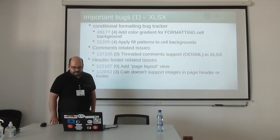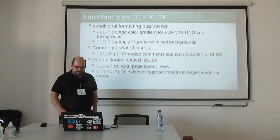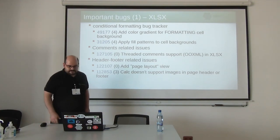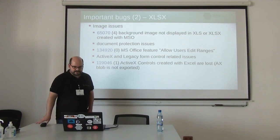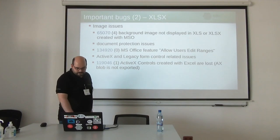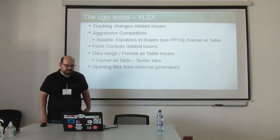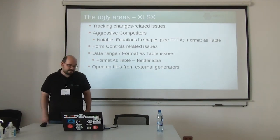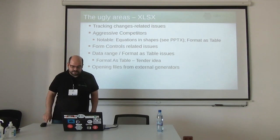Some important XLSX bugs are listed here for reference. It would be really nice to support different types of gradient fill and pattern backgrounds for cell backgrounds — these have been requested for a long time. On the ugly side for XLSX, change tracking looks kind of deprecated even in Excel so maybe it's less important, but equations, shapes, and formatting as table are super useful features that are still missing.